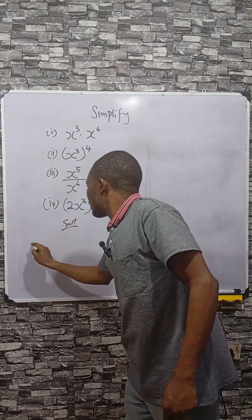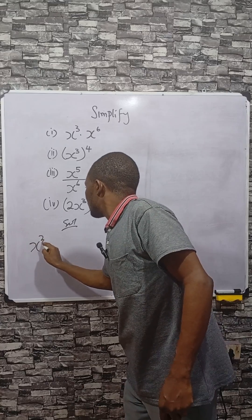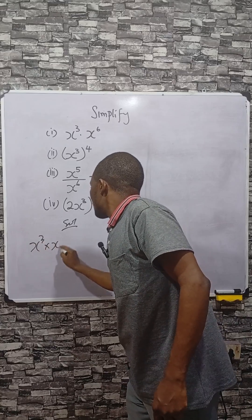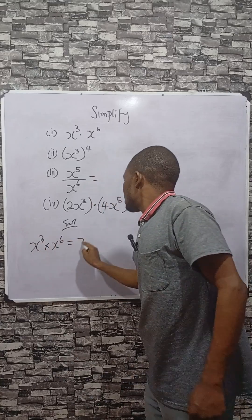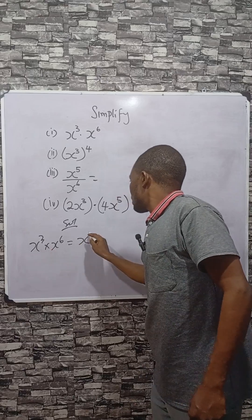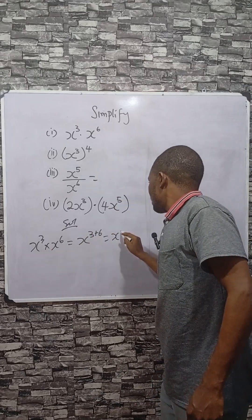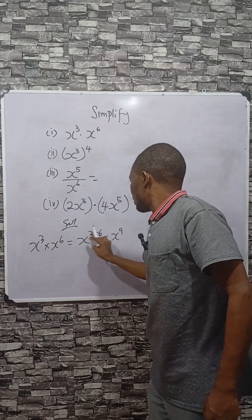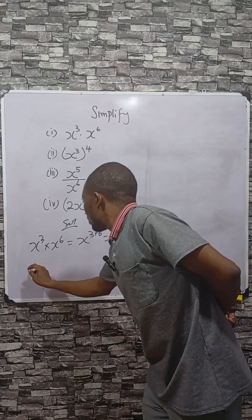Now the first one says you have x to the power 3 times x to the power 6. Since they have the same base, you can add the powers. That's x to the power 9 because 3 plus 6 is 9.